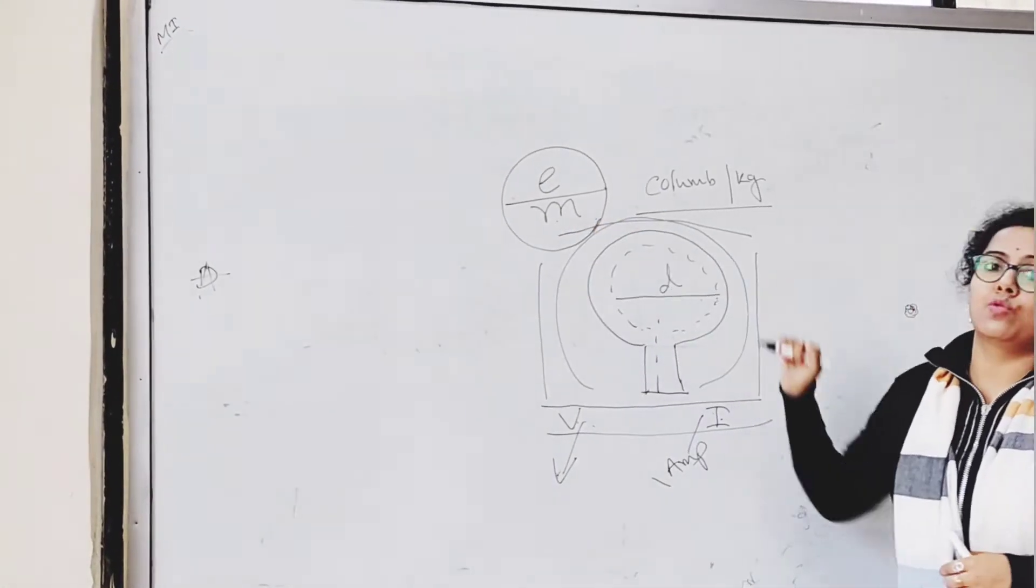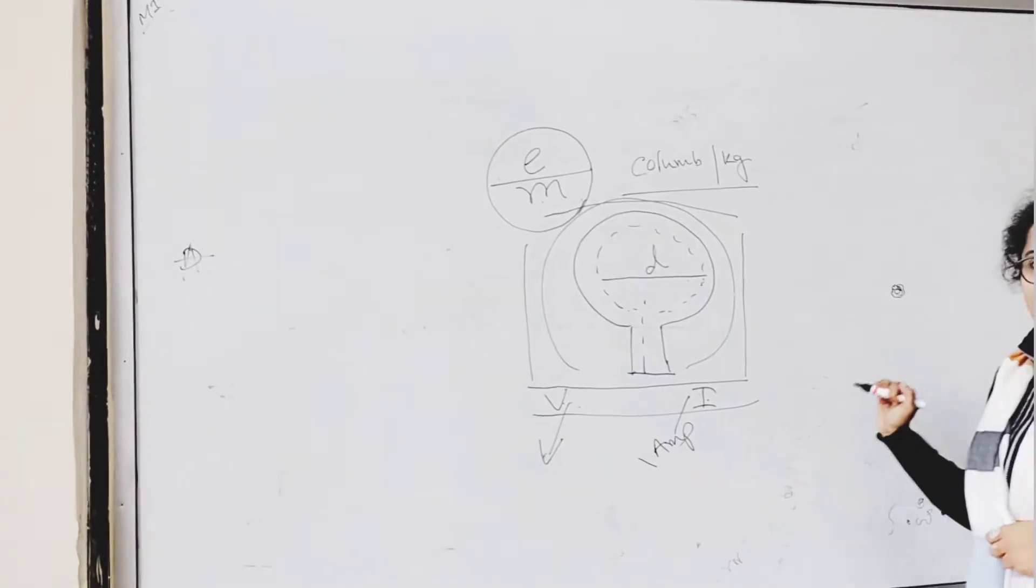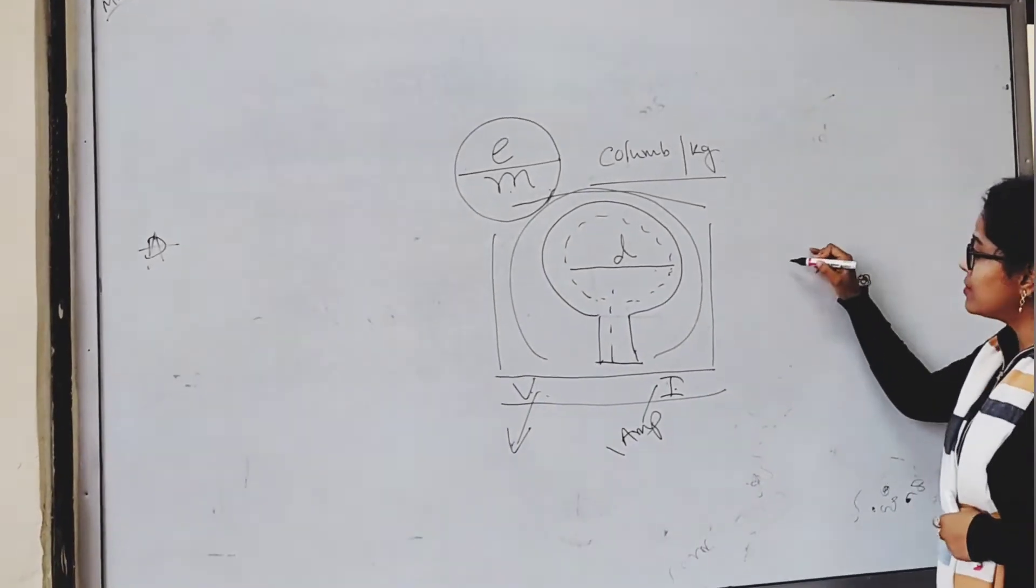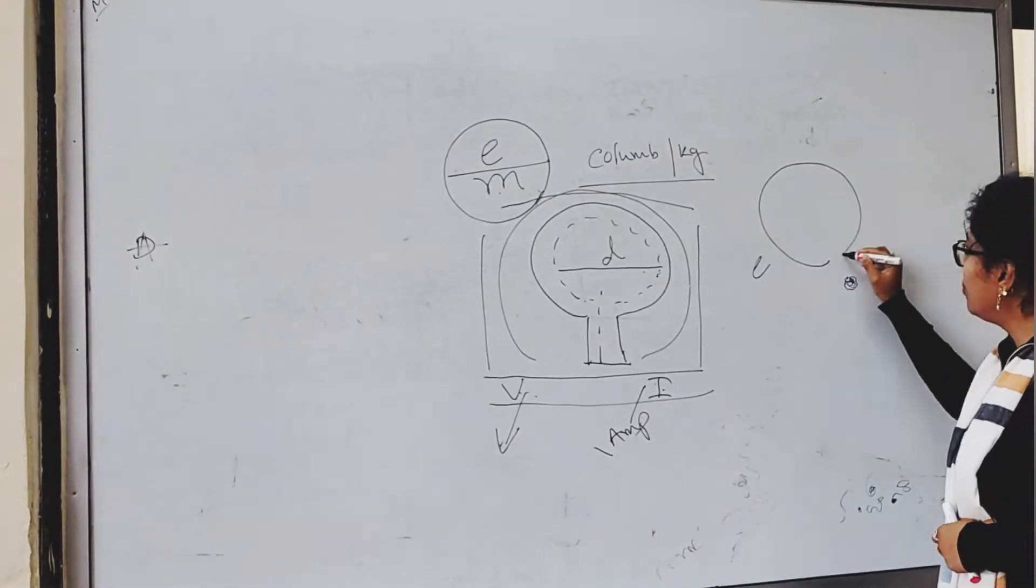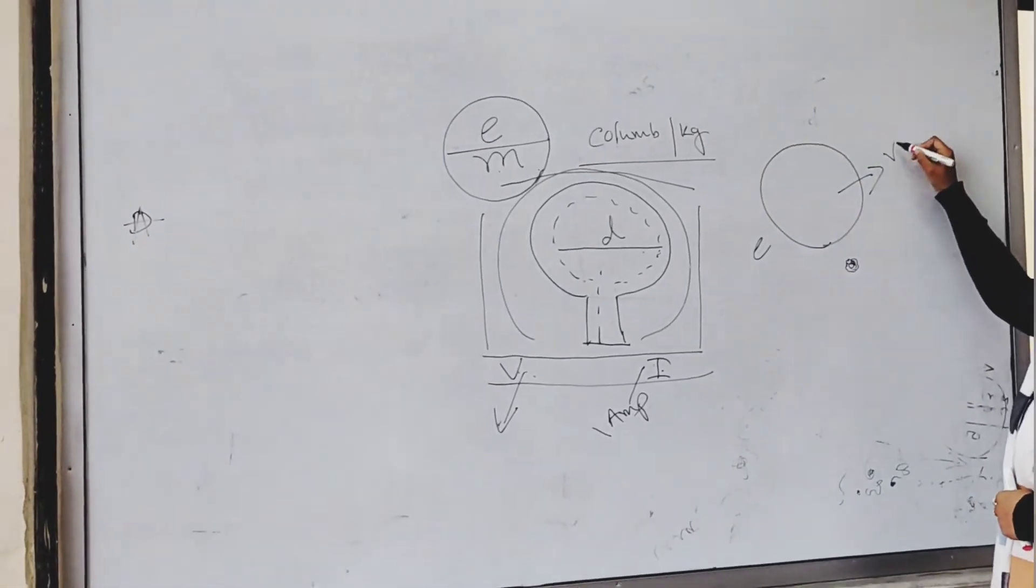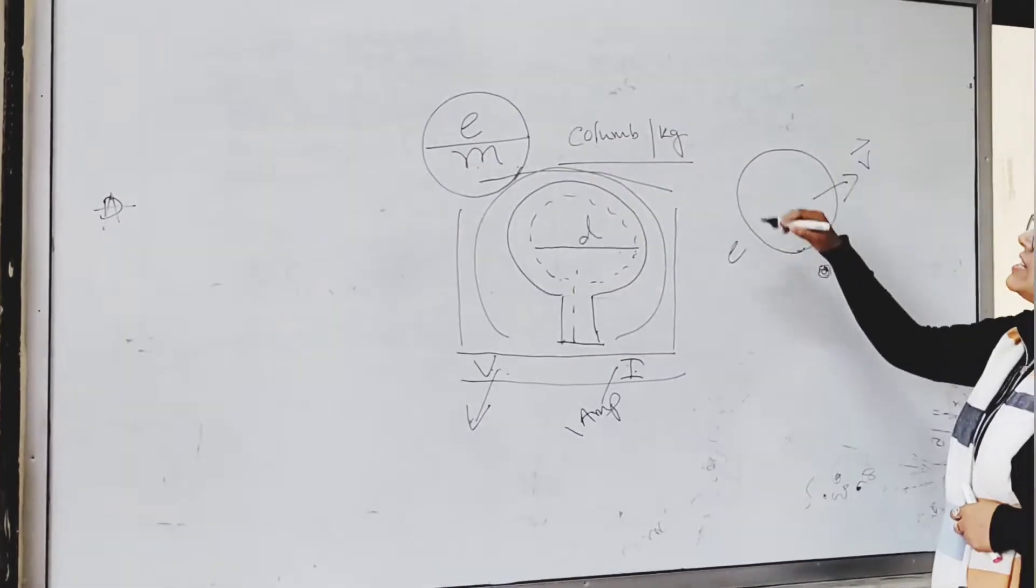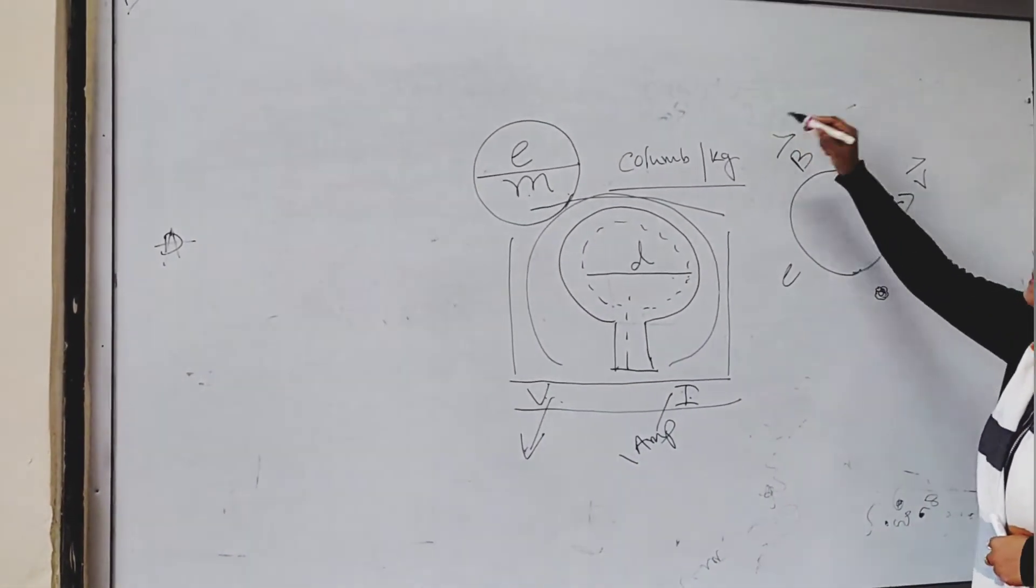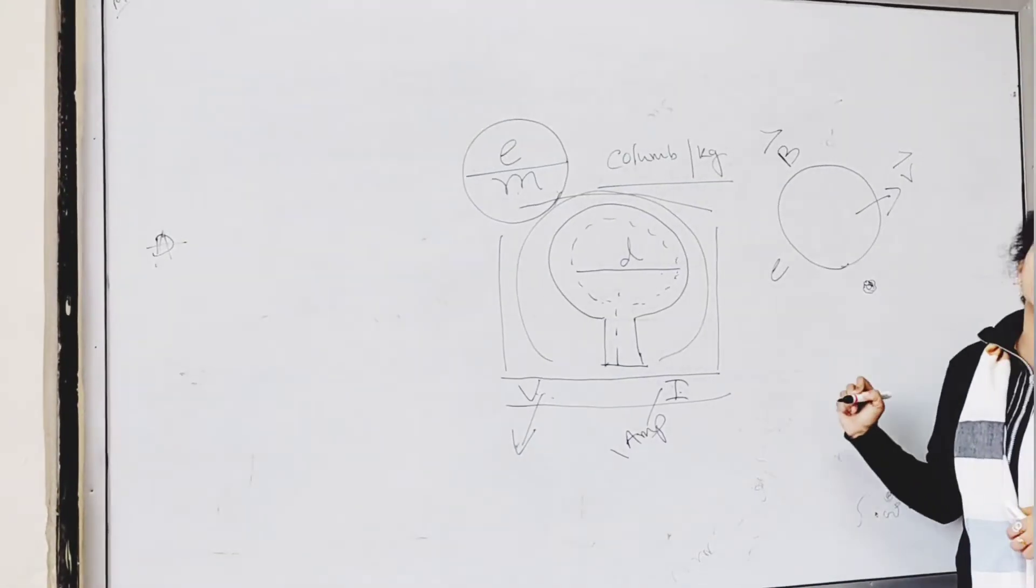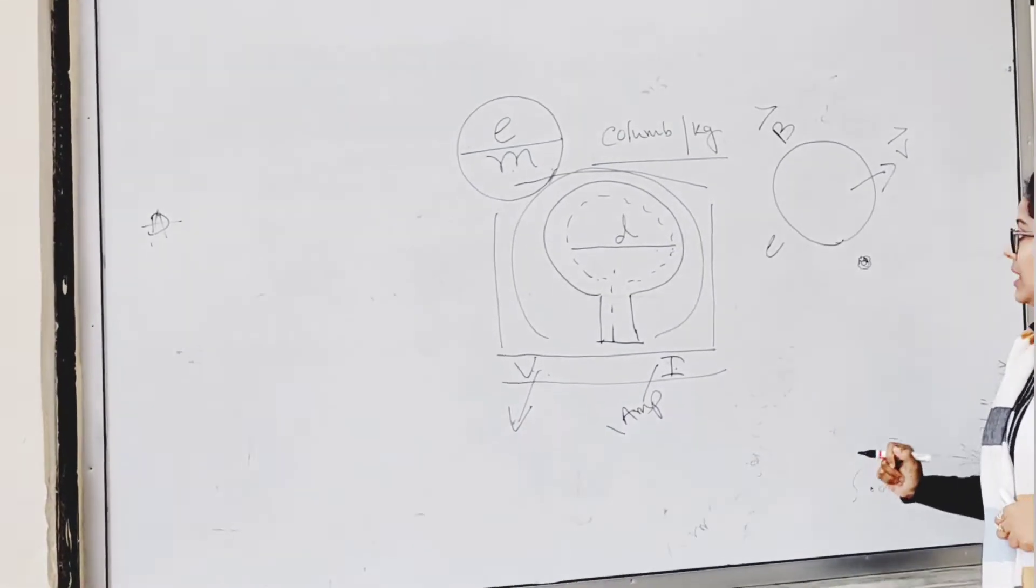How to find out the e by m? What will be the working formula of e by m? Now if you suppose an electron is moving with velocity V in a homogeneous magnetic field B, it is bound to express the Lorentz force.